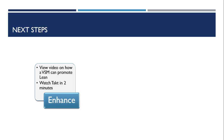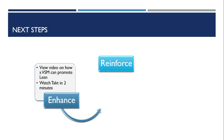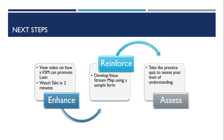First, you will have the opportunity to enhance your learning by viewing two videos. The first video is about how a value stream map can promote lean. The second is a two-minute video that will explain the concept of takt. Then, you can reinforce your learning by using the sample form provided in this module to develop your own value stream map. And finally, you will assess your learning by completing a practice quiz on this key topic.